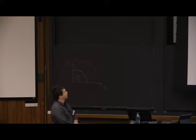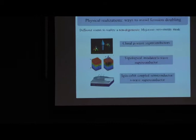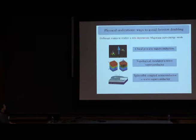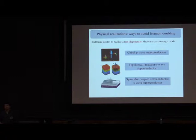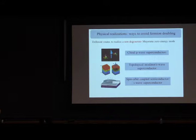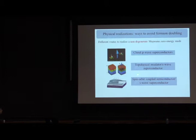I will discuss three different routes on how to realize Majorana zero energy states in topological superconductors. The first system I will talk about is strontium ruthenate. Then I will discuss topological insulator–superconductor heterostructures, and then spin-orbit coupled semiconductor–superconductor heterostructures.